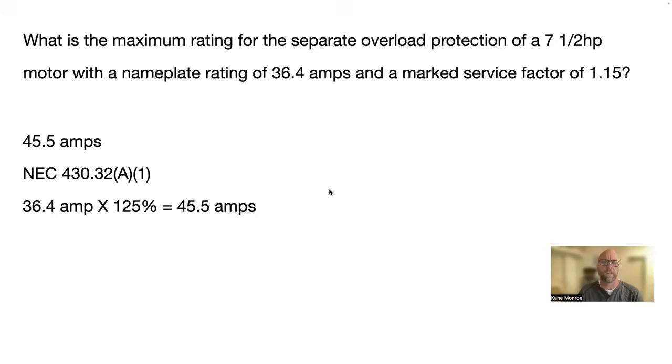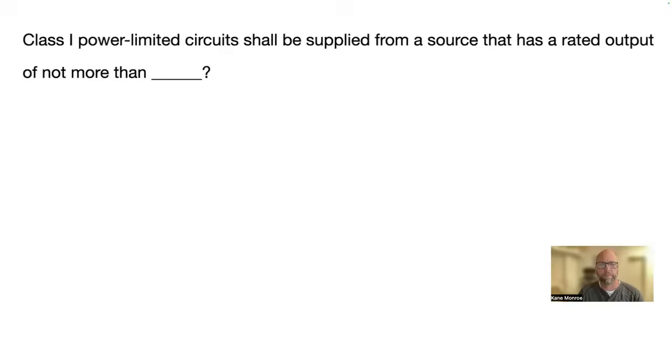Remember, that's in 430.32 A1. Next one, class one, power limited circuits shall be supplied from a source that has a rated output not more than blank, 30 volts. You'll find that back in 725.41 A.